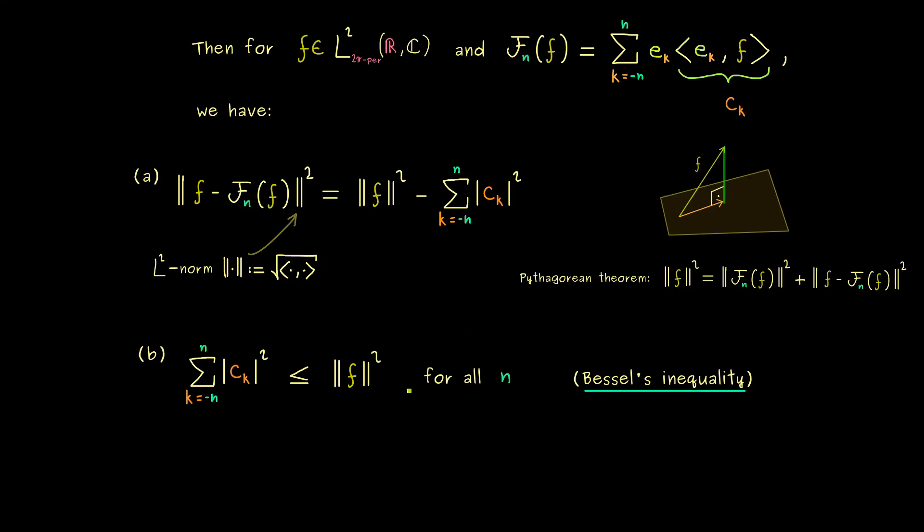And since it holds for all n, it also holds in the limit process. There you can just use your knowledge about real sequences, because on the left-hand side we have a monotonically increasing sequence which is bounded from above. So it's a convergent sequence where the limit is also bounded by the same number. Moreover, you can also apply your knowledge about real series, because here we have a convergent series, which means that the sequence inside the series is a zero sequence. More precisely, this sequence of complex numbers has to converge to zero. In other words, Bessel's inequality implies that the Fourier coefficients converge to zero. So this is something to remember—eventually the contribution to the Fourier series gets smaller and smaller if n increases.